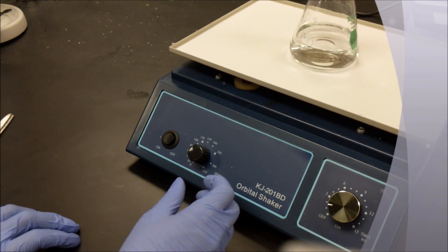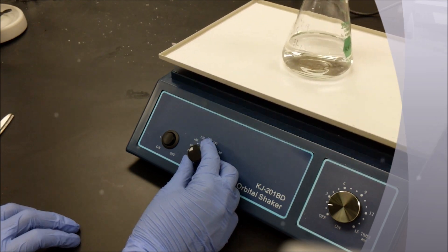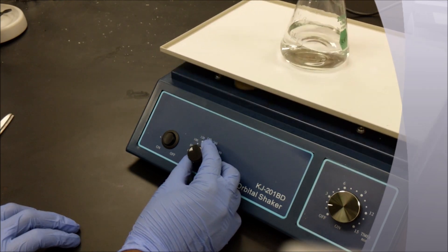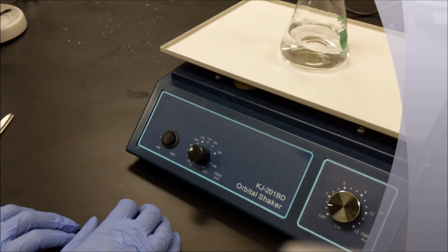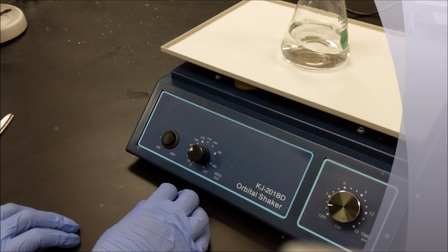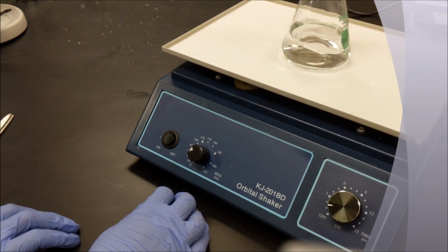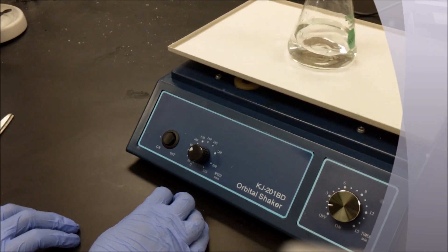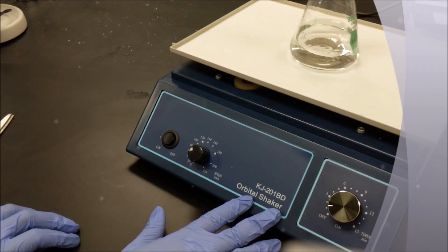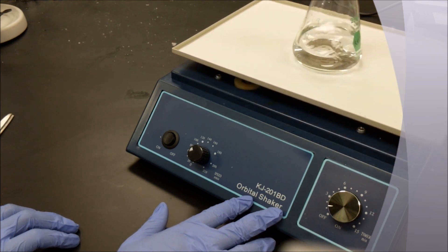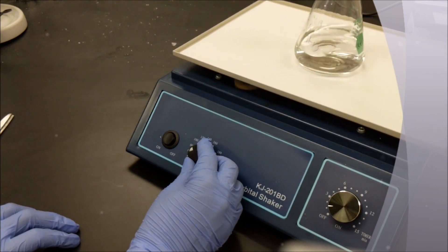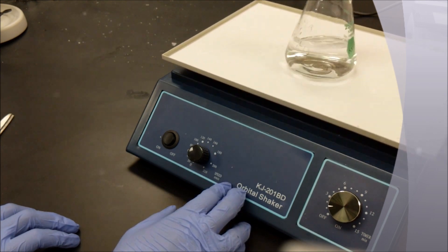go ahead and turn the revolutions per minute knob, increasing gradually and slowly until you get a relatively consistent shake of your solution on the orbital shaker platform. If you want to increase the speed, you may.